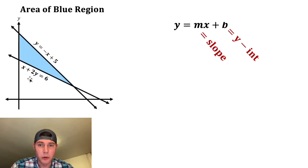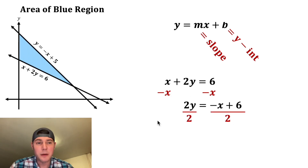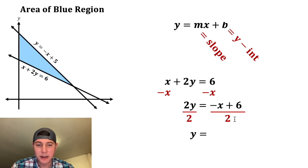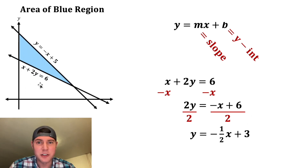And let's do the same thing for the lower one. We're going to subtract x from both sides. Left-hand side is 2y, right-hand side is negative x plus 6. And then we're going to divide both sides by 2. Left-hand side is just y, and we divide each term by 2: negative x divided by 2 is negative one-half x, and 6 divided by 2 is 3. So now we can write the lower equation in slope-intercept form.